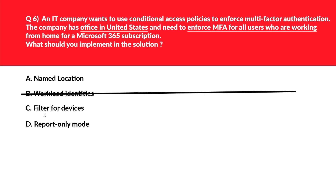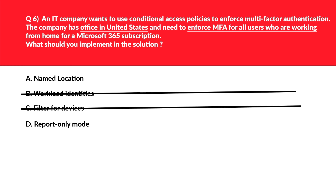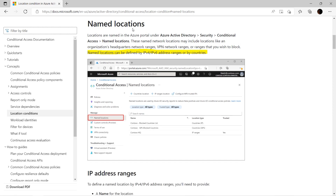Let's now look at option C, that is filter for devices. Filter for devices is used to target or exclude specific devices in their environment. As per the question, there is no mention of devices like laptops or mobile devices, so we'll reject this. Let's now look at option D, that is report only mode. Report only mode allows administrators to evaluate the impact of conditional access policies before enabling them in their environment. It doesn't quite fit the question — we'll reject this.